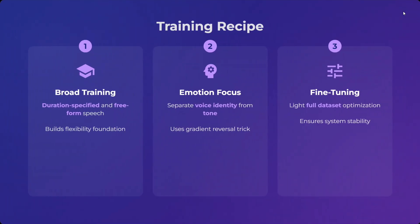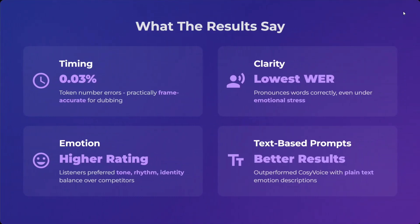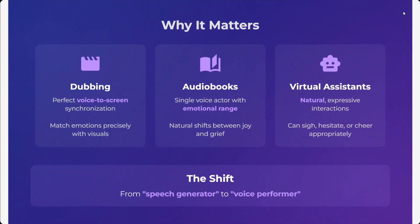The training recipe includes broad training with duration-specified and free-form speech, emotional focus, fine-tuning on a high-quality dataset, and optimization. The results: token number error is practically frame-accurate for dubbing at 0.03%. It has the lowest word error rate — that's the best part. In terms of emotion, it has the highest rating, and text-based prompts give better results compared to CozyVoice with plain text emotion descriptions. So both word error rate is lowest and emotion rating is highest.